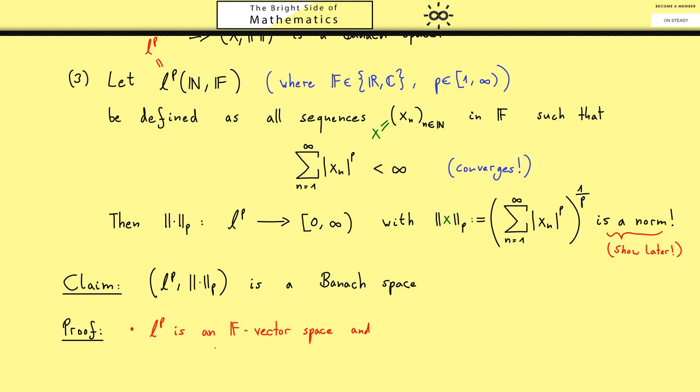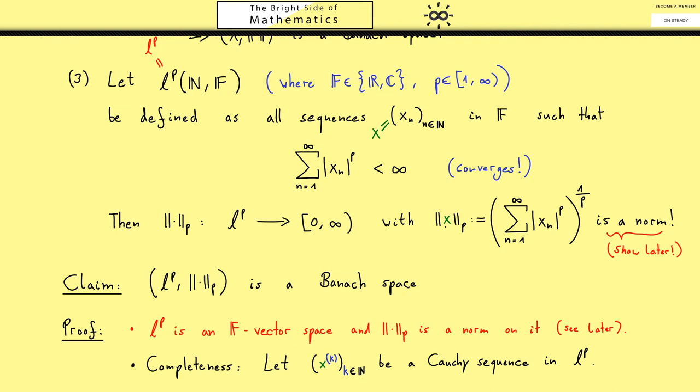Hence our claim is l^p together with this norm is a Banach space. The first part of the proof has to be that l^p is an F-vector space and that this p-norm is indeed a norm on it. I already told you we don't do it here, we assume it, we will prove it later. That's just because we need a lot of technical details for this and I think it will distract us from the important completeness part of the proof here. Now in order to show the completeness we have to choose an arbitrary Cauchy sequence. So this might be hard to understand now. The sequence x is a sequence in F and now we have to consider sequences of sequences. Therefore I choose here an upper index k to denote the different sequences we have in our Cauchy sequence. And now we have to show that all the sequences here in a row converge to another sequence, a limit.